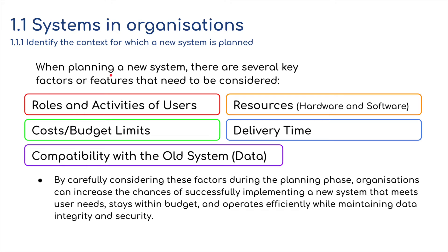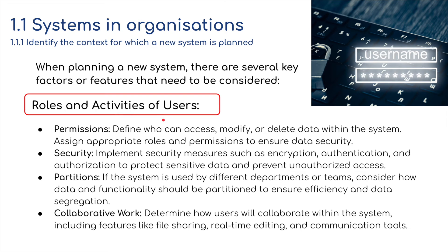We then move on to key factors relating to the roles and activities of users — will these change? We need to determine what users can even modify, and what a user has access to, whether they can delete or update data on the system. This should be aligned with the roles and permissions of the existing system.